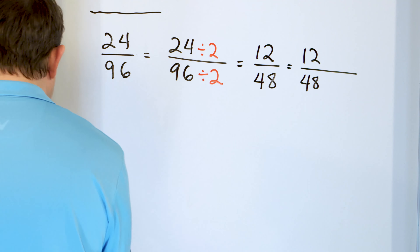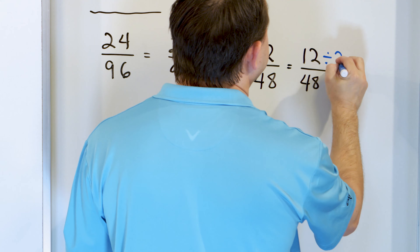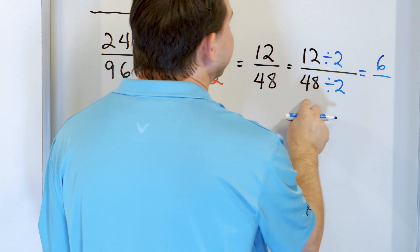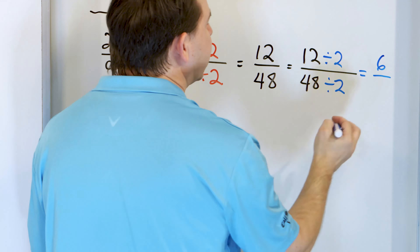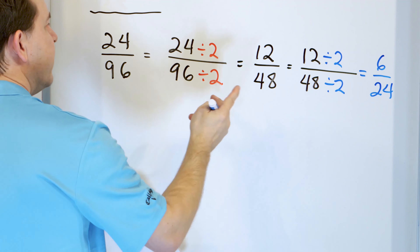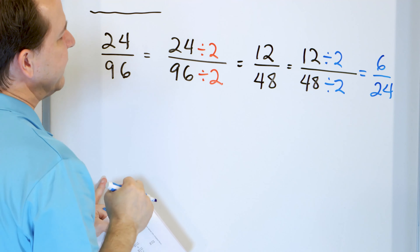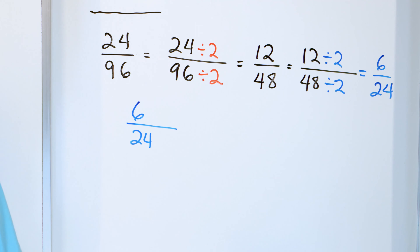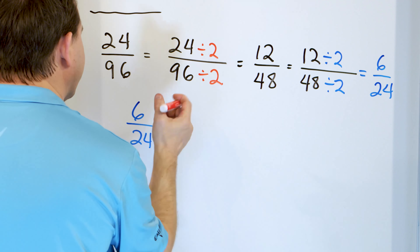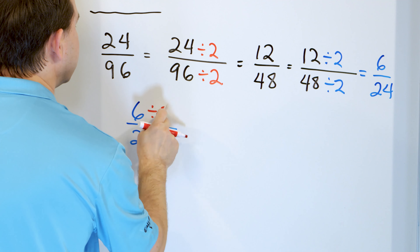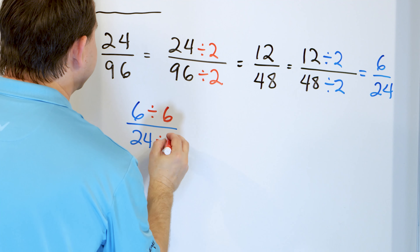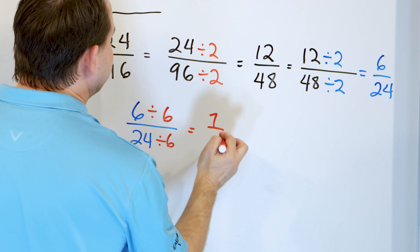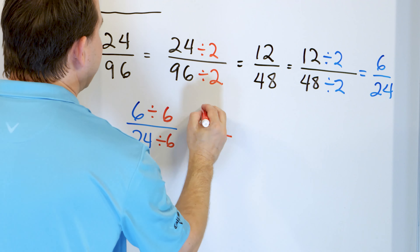So I divide the top and bottom by two again. Twelve divided by two is six, and forty-eight divided by two gives twenty-four. These are again even numbers, so I write six twenty-fourths. Here I'll be a little smarter — I can divide by six, because both are divisible by six. Six divided by six is one, twenty-four divided by six is four, because four times six is twenty-four. So the answer is one-fourth.